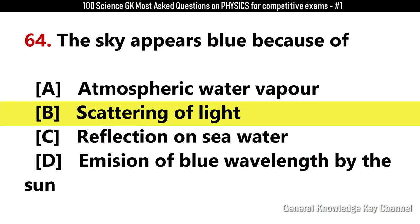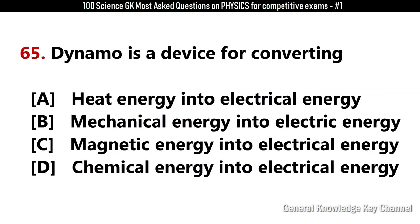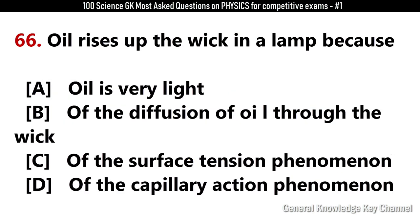Tungsten is used for the manufacture of the filament of an electric bulb because? Answer D: It has a very high melting point. Who measured the velocity of light first? Answer C: Roemer. The energy emitted by the sun is due to? Answer C: Nuclear fusion. The sky appears blue because of? Answer B: Scattering of light. Dynamo is a device for converting? Answer B: Mechanical energy into electrical energy. Oil rises up the wick in a lamp because of capillary action.